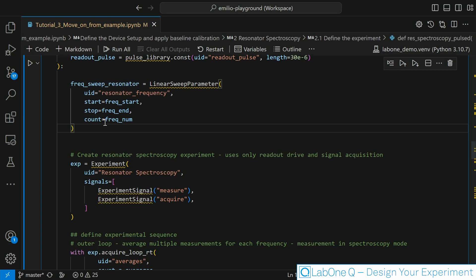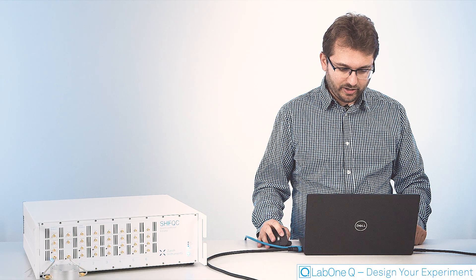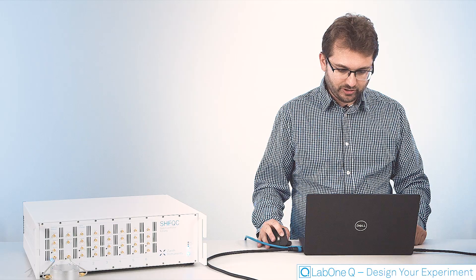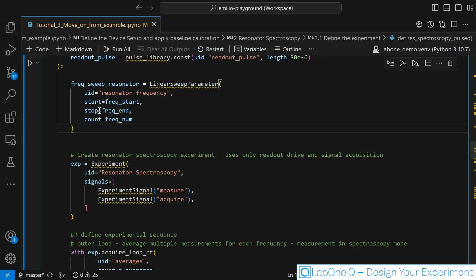Most experiments in Lab1Q begin with a sweep parameter which is a collection of values that you want to test in your Lab1Q experiment. In this case we are beginning with a frequency sweep resonator. It is a linear sweep parameter that starts at a certain frequency and it tests a certain number of frequencies given by this parameter count.